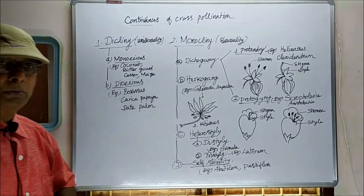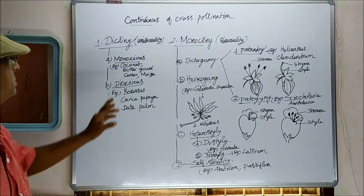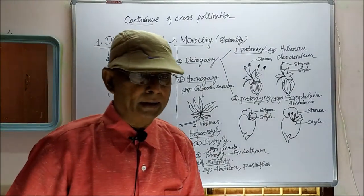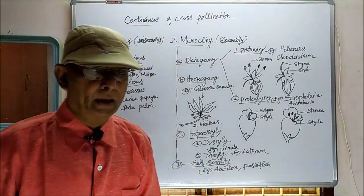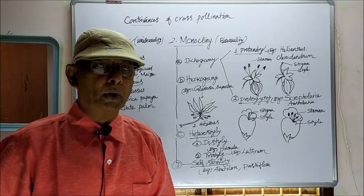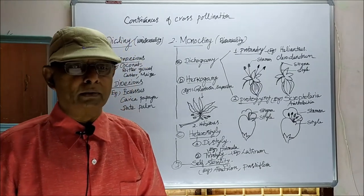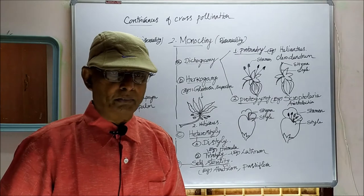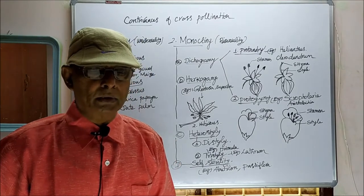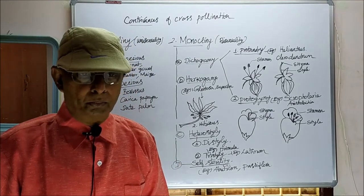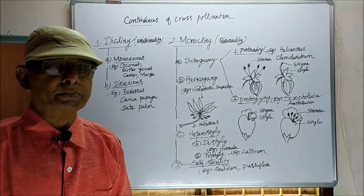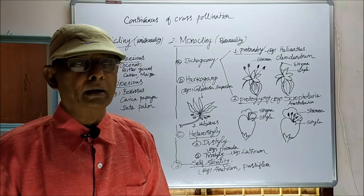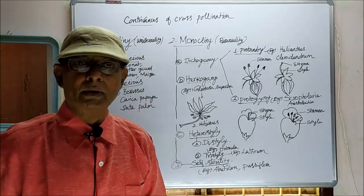Now we will see one by one. Dicliney — what is dicliney? When the plants produce only unisexual flowers to prevent self-pollination and to promote cross-pollination, that condition is called dicliney.